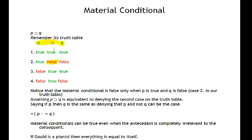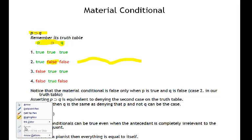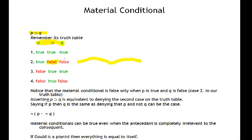What you're saying then is that if you assert if p then q, you're basically asserting the negation of the second case. So if you say if p then q, you're basically saying not the second case. Denying the second case in the truth table is what we're doing when we're asserting that if p then q. Saying if p then q is the same as denying that p and not q.